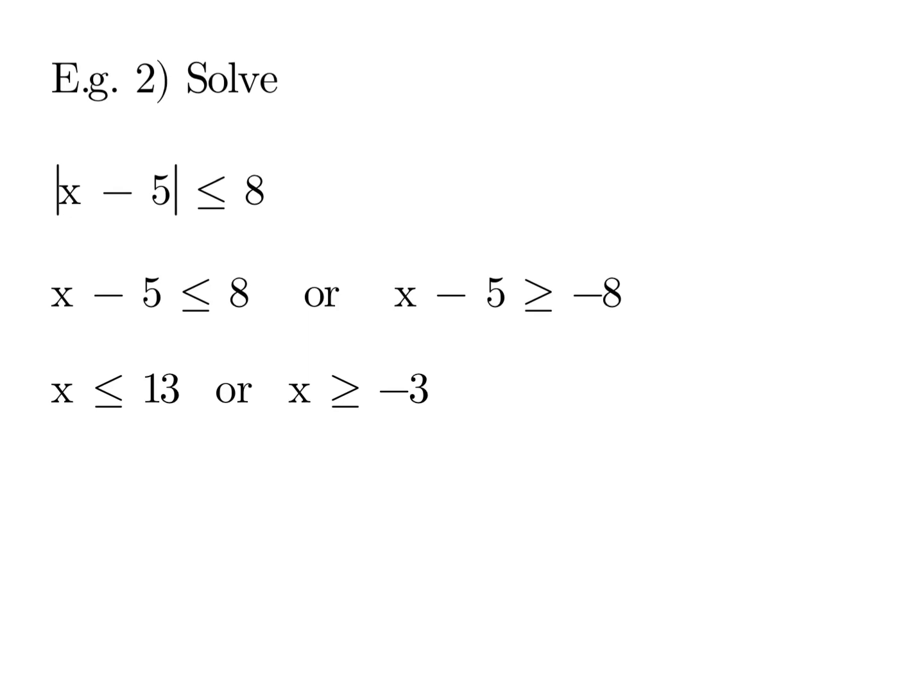But on the minus one, we actually change the inequality to the opposite direction. So one solution is solve it as is: x minus 5 less than or equal to 8. The other solution is x minus 5, change the inequality to greater than or equal to minus 8. And then you add 5 to both sides, and you get x is less than or equal to 13, or x is greater than or equal to minus 3.